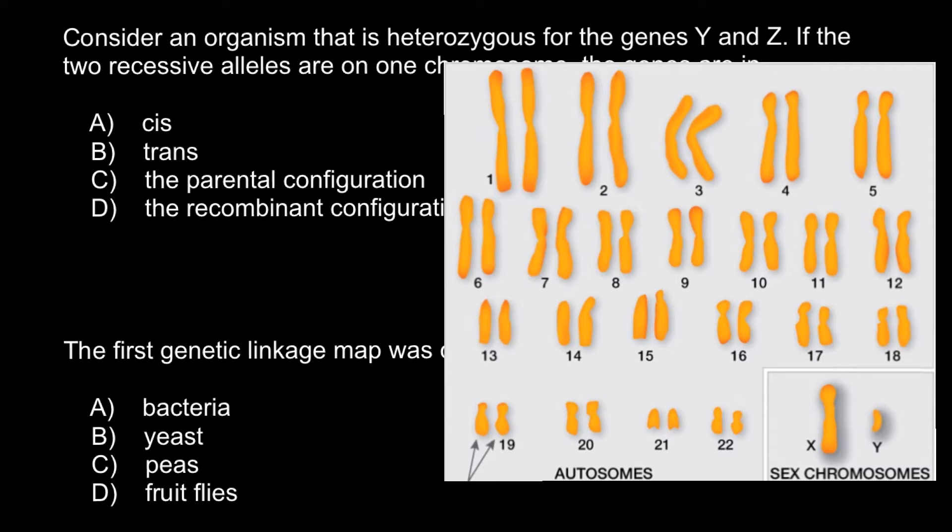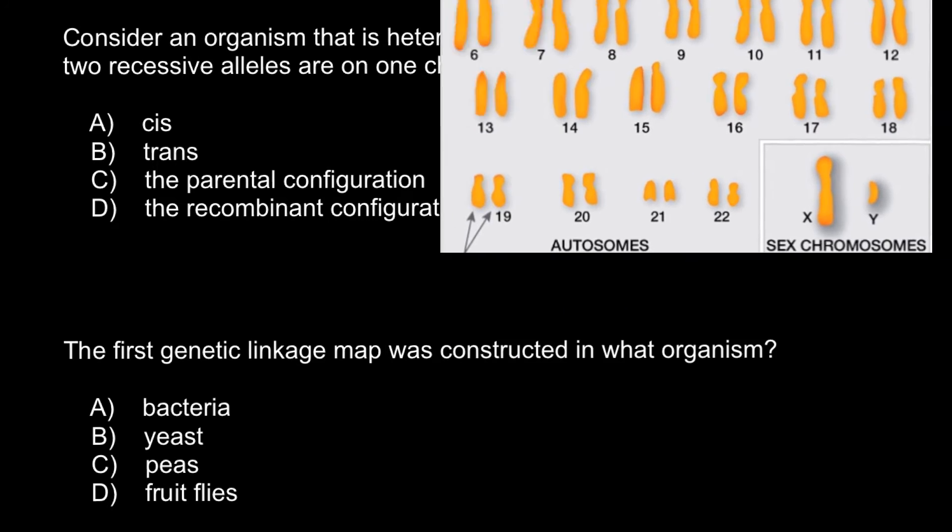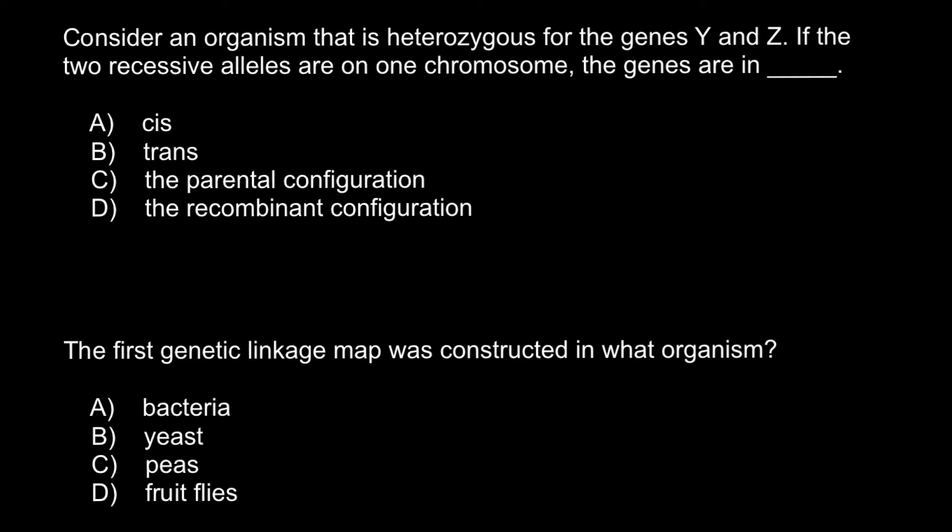These chromosomes have the same genes in the same order, but some genes may be slightly different. We call such genes or such variants alleles. Now, we don't need this picture anymore. Let me draw two homologous chromosomes: one from the mother side, another from the father side.